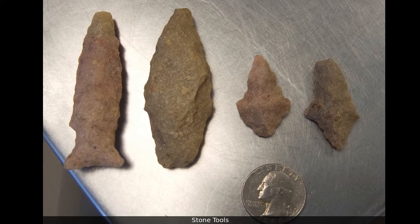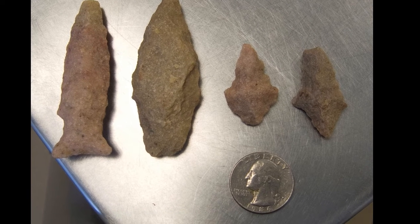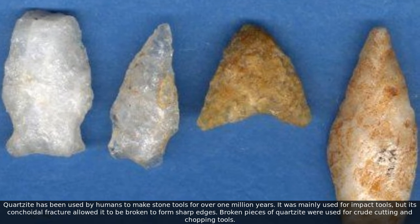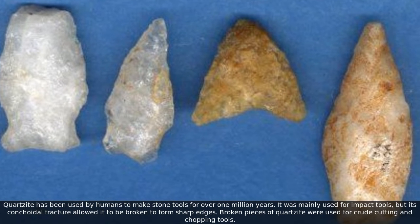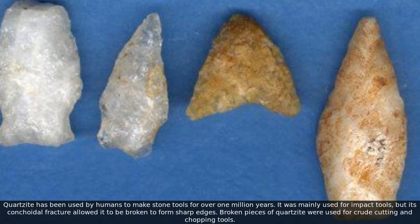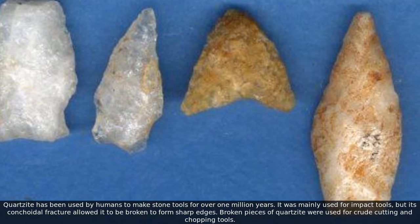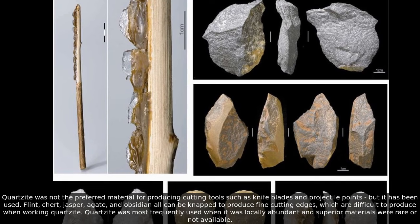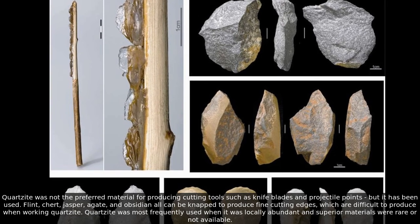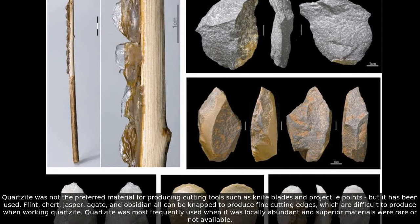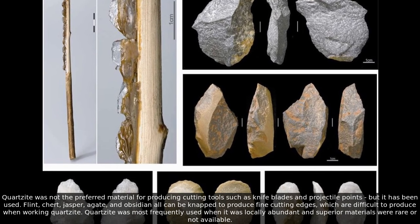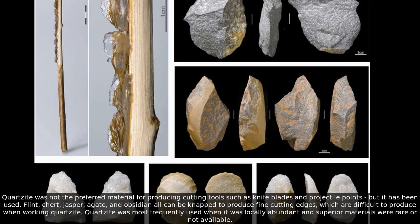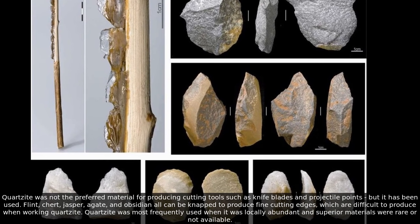Stone tools. Quartzite has been used by humans to make stone tools for over 1 million years. It was mainly used for impact tools, but its conchoidal fracture allowed it to be broken to form sharp edges. Broken pieces of quartzite were used for crude cutting and chopping tools. Quartzite was not the preferred material for producing cutting tools such as knife blades and projectile points, but it has been used. Flint, chert, jasper, agate, and obsidian can all be knapped to produce fine cutting edges, which are difficult to produce when working quartzite. Quartzite was most frequently used when it was locally abundant and superior materials were rare or not available.